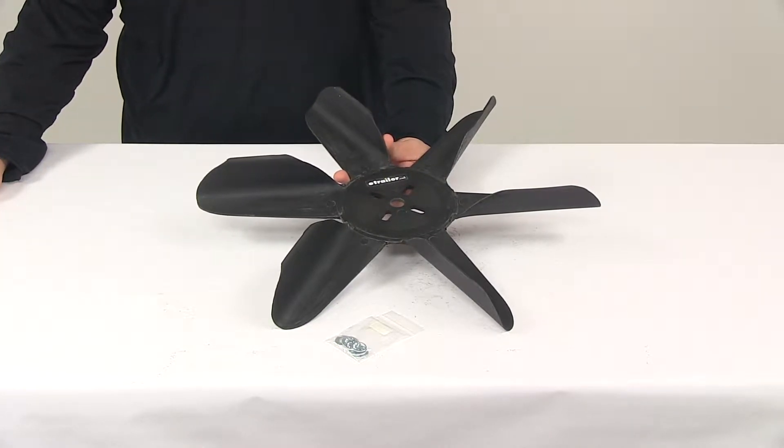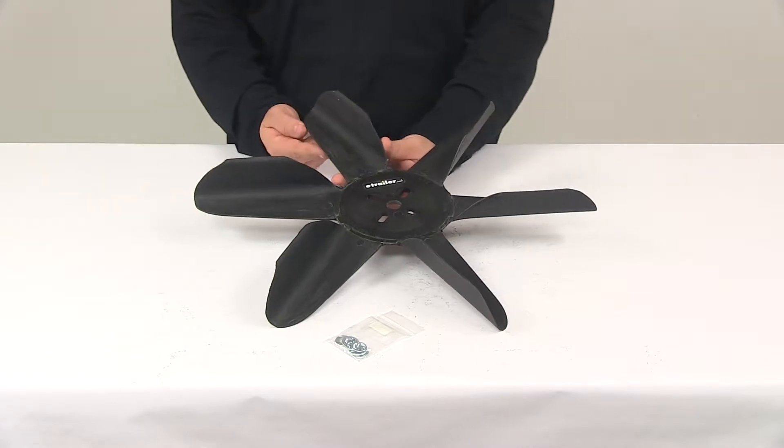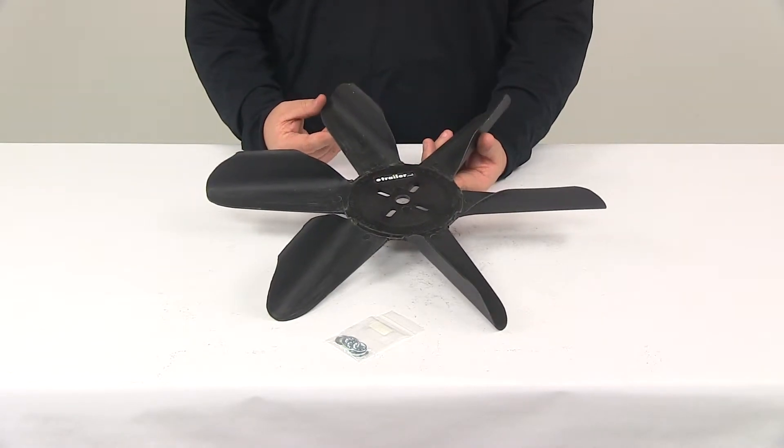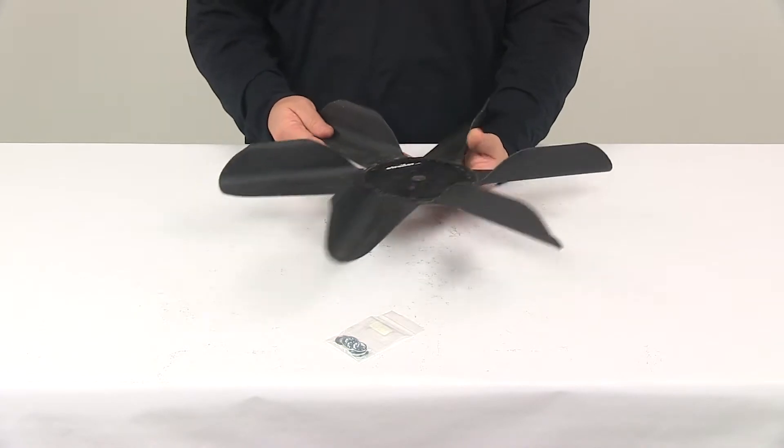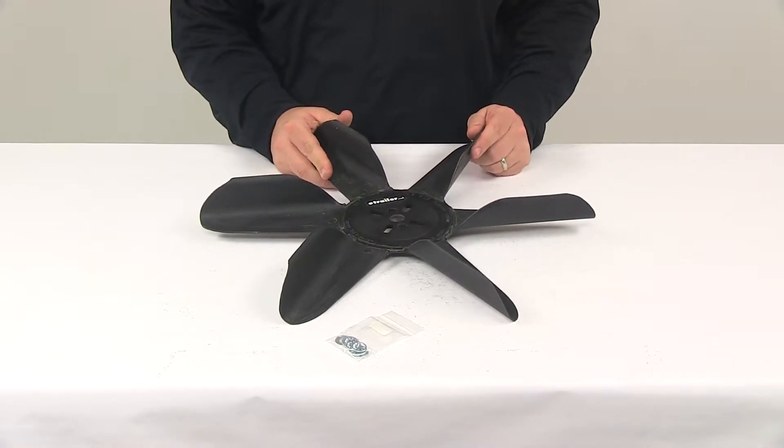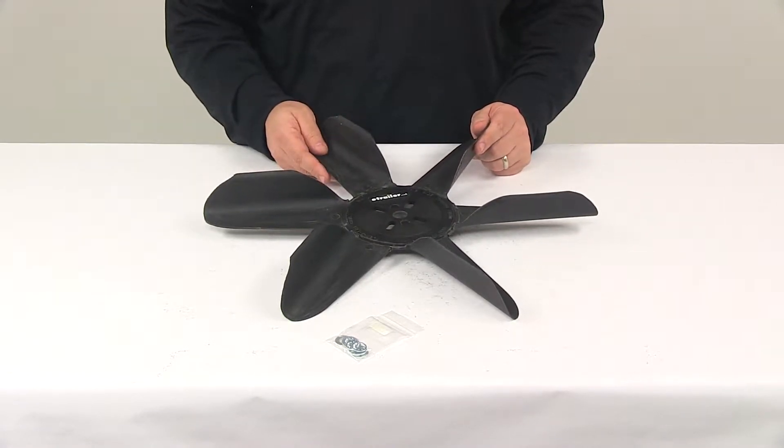Today we're going to take a look at the Flexi-Lite 18 inch nylon engine cooling fan. This nylon fan moves a lot of air and weighs only 11 ounces, making it a lightweight design. It's ideal for race and performance applications where cost and weight are very important.